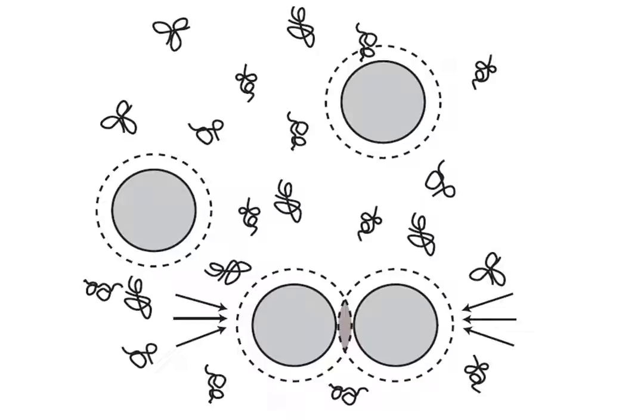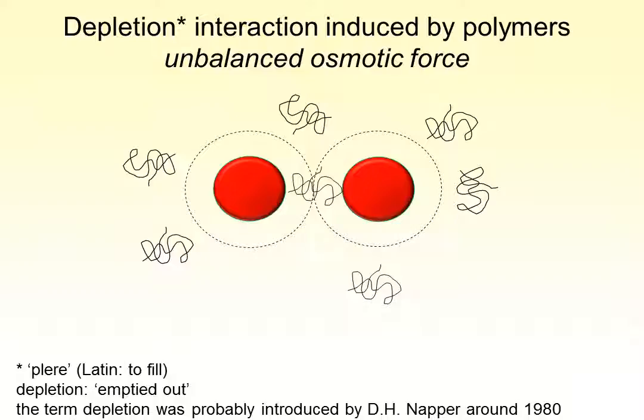The mechanism that is responsible for the attraction originates from the presence of these depletion layers. When the depletion zones overlap, the polymers simply cannot enter the gap between the spheres.